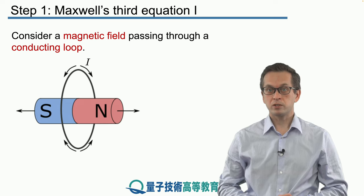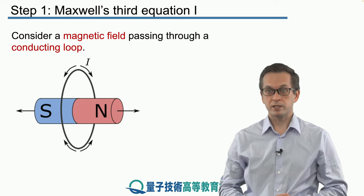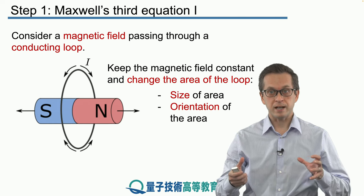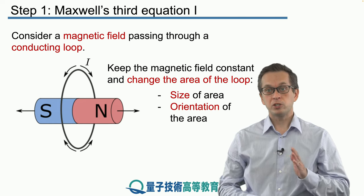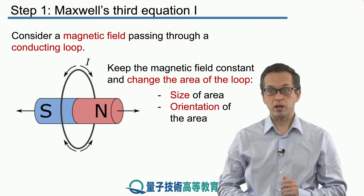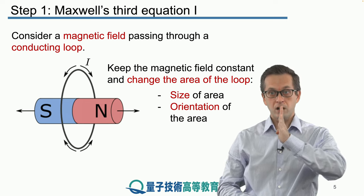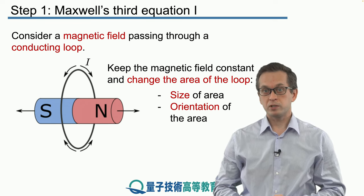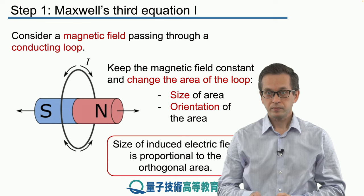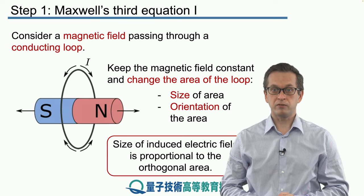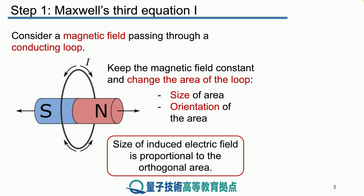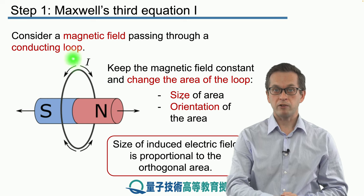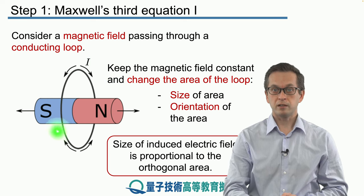We can also consider the magnetic field to be static and play around with the loop. For example, we can increase its size or change the orientation of the area. Experimentally we observe that the size of the induced electric field is proportional to the orthogonal area - the area enclosed by the loop intersecting the magnet.